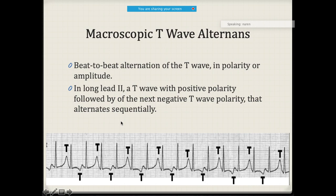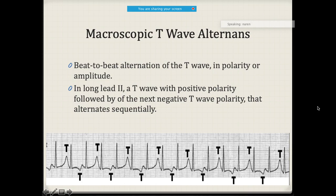An important phenomenon is macroscopic T wave alternance. Alternance refers to alteration of the T wave in polarity or amplitude. In long QT2, a T wave with positive polarity is followed by a T wave with negative polarity, and this keeps alternating.